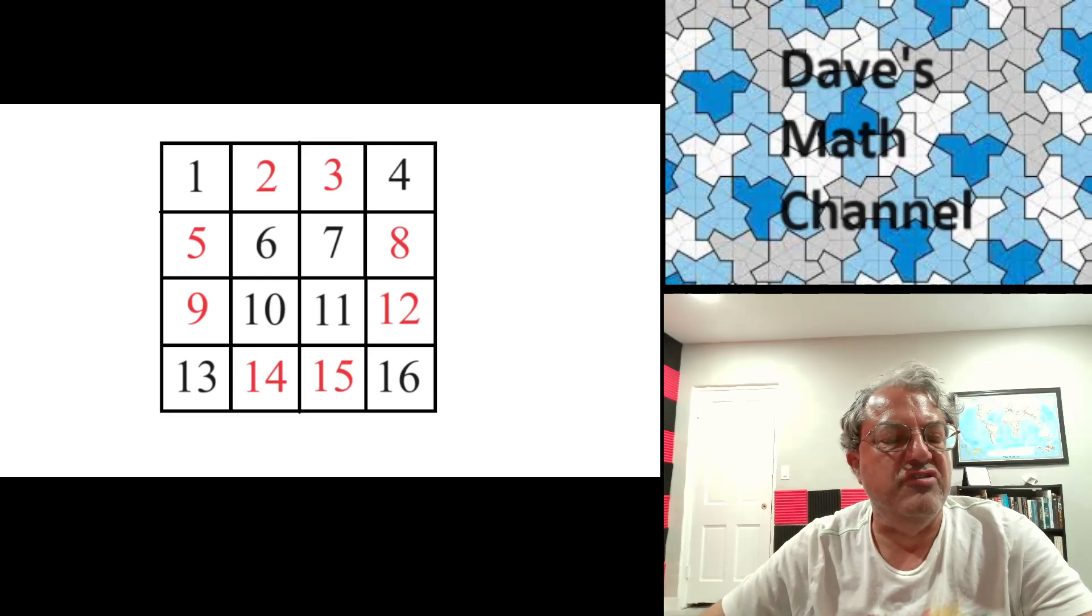Here's how you start. It's very easy. You start with a 4x4 grid and mark the numbers 1 through 16 in order, going from left to right and then down the rows, just the normal way you would write in the squares.